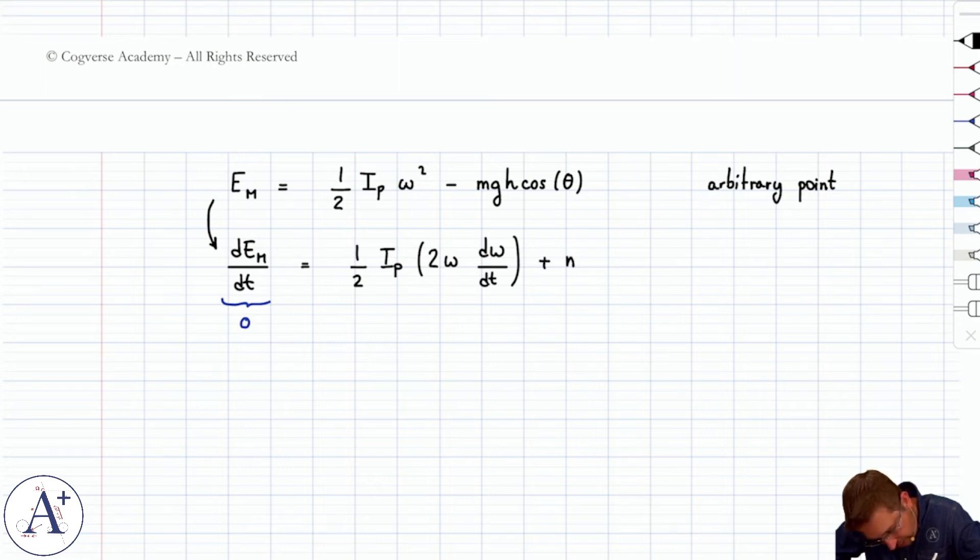And that's going to be one-half ip times two omega d omega dt. Actually plus here mg h because minus cosine gives you sine, but careful, chain rule d theta dt.